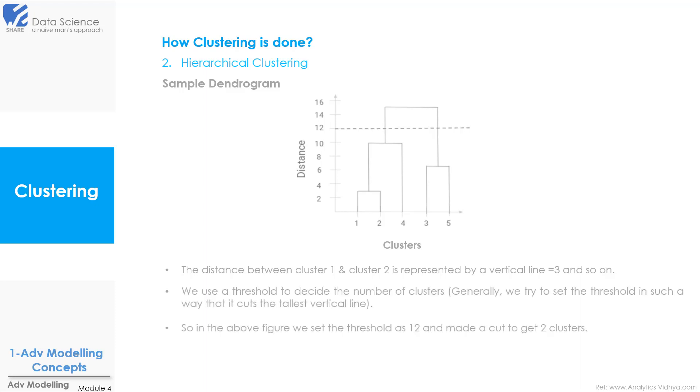We use a threshold to decide the number of clusters. Generally we try to set the threshold in such a way that it cuts the tallest vertical line. If you see in the above figure we set the threshold as 12 and made a cut to get 2 clusters.